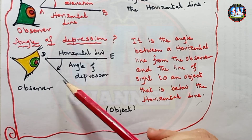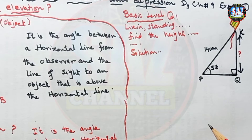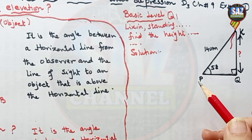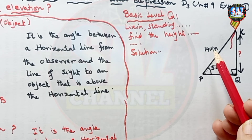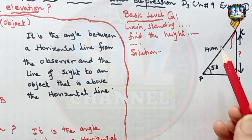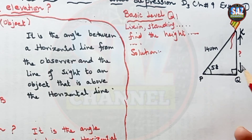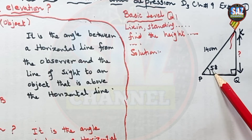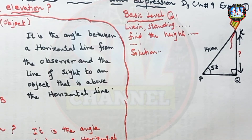Let's apply this concept to exercise 9a. Question number 1: Lixin, standing at P, is flying a kite attached to a string of length 140 meters. The angle of elevation of the kite K from her hand is 58 degrees. Assuming that the string is taut, find the height of the kite above her hand.